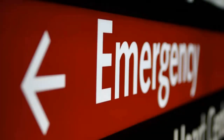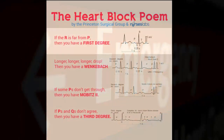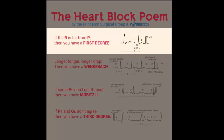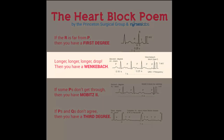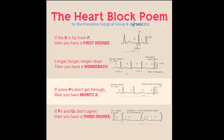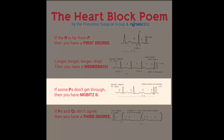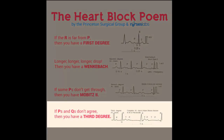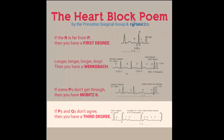To finish off, here's a heart block poem from Princeton Nursing that may or may not assist you: 'If the R is far from P, then you have a first degree. Longer, longer, longer, drop — then you have a Wenckebach. If some P's don't get through, then you have a Mobitz two. If P's and Q's don't agree, then you have a third degree.' That's about a coffee's worth on heart blocks — thanks for watching, see you next time!